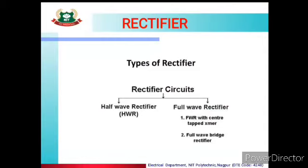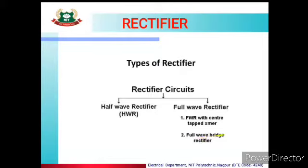As we know, rectifier circuits are of two types: one is the half wave rectifier and the second is the full wave rectifier. Rectifier का काम है AC को DC में convert करना। Full wave rectifier is further subdivided into two types: one is the full wave rectifier with center tap transformer, also known as midpoint type full wave rectifier, and the second is the full wave bridge rectifier. Now we are going to study the full wave rectifier with center tap transformer.